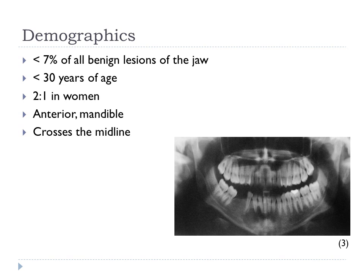They are found more commonly in the mandibular jaw over the maxillary jaw, the anterior over the posterior, and will normally cross the midline. If this lesion is found within the first two decades of life, it is most common to find the formations anterior to the first mandibular molar and anterior to the maxillary canine.